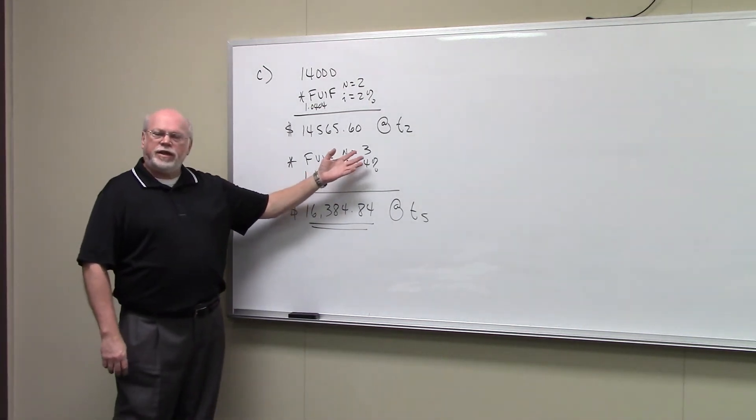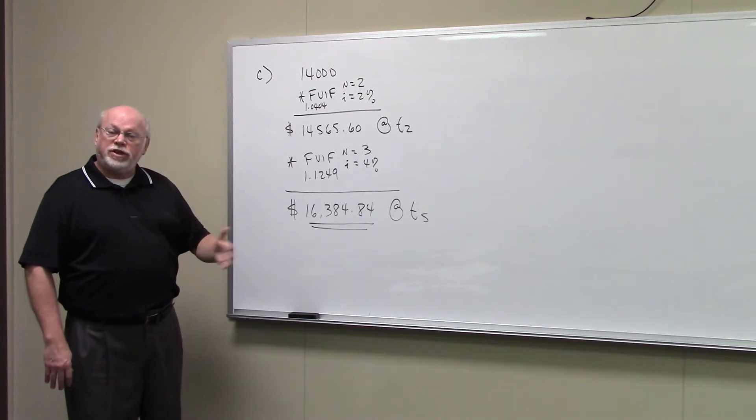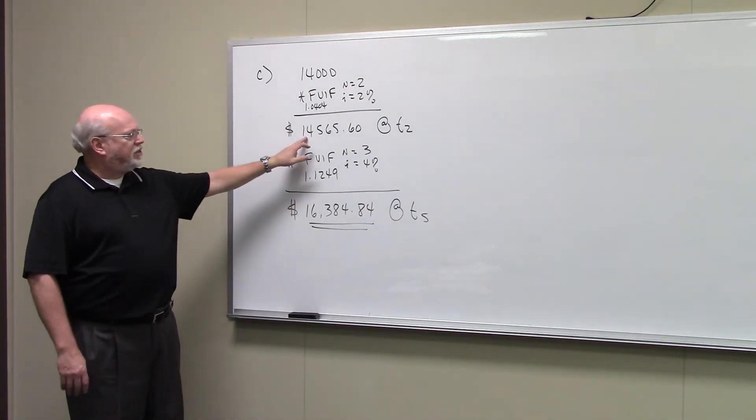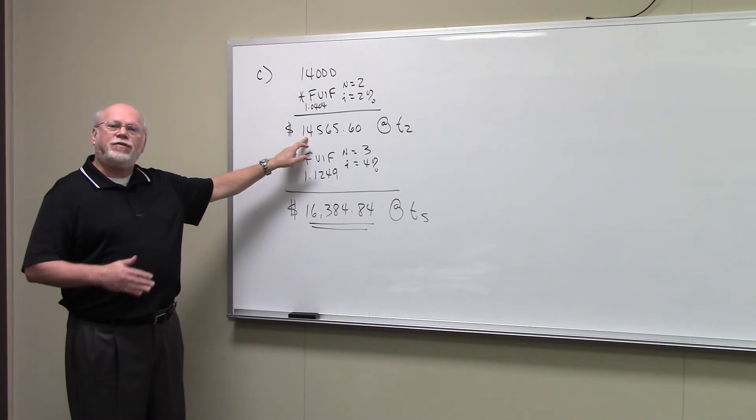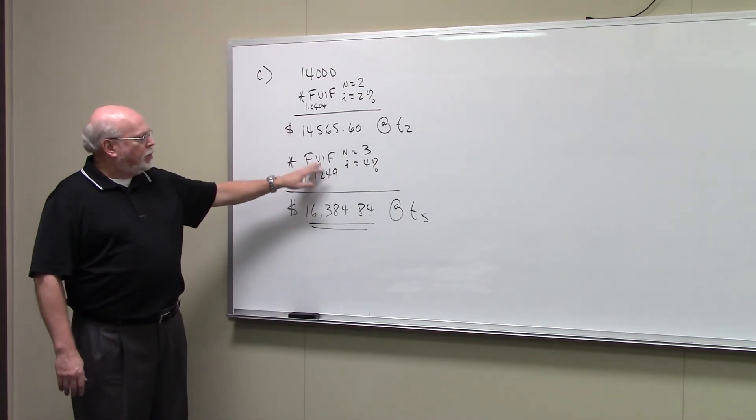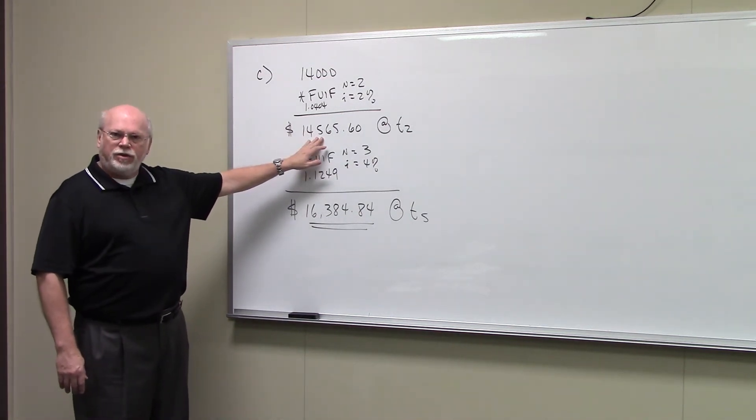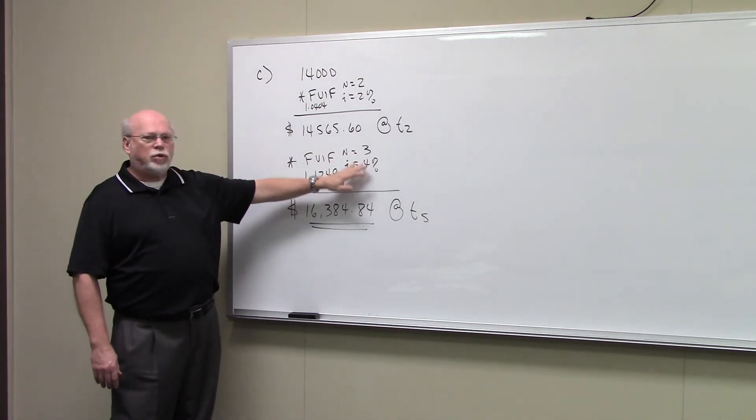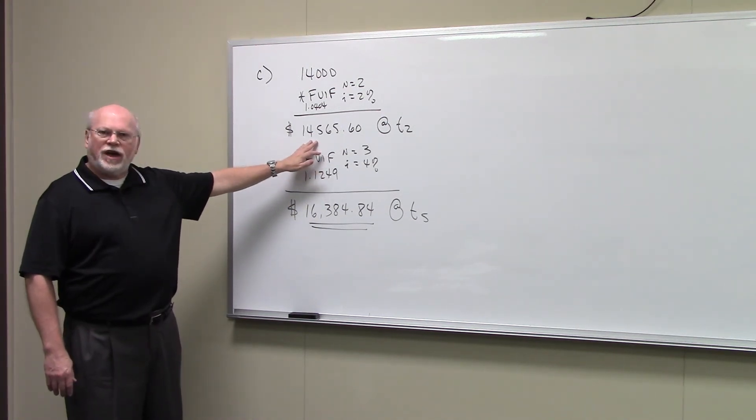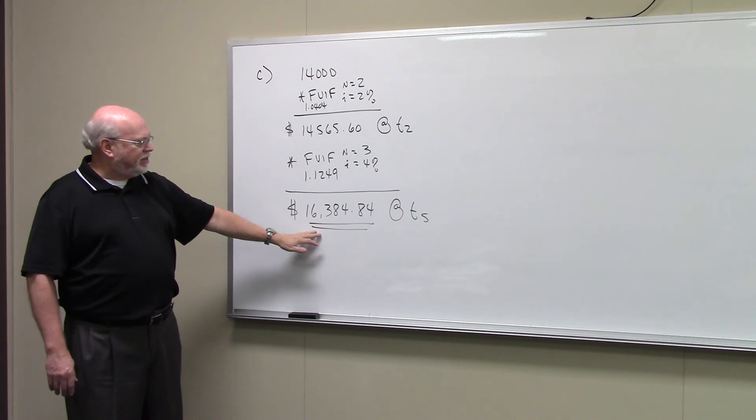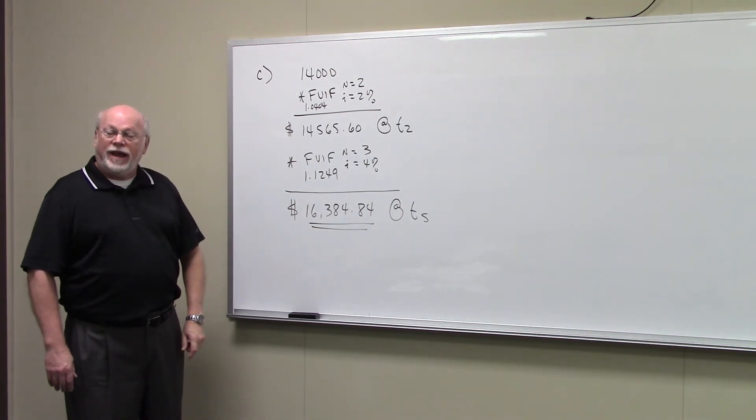After that, now, the car's going to go up in value 4% a year for three years. So if this is the value at the end of the second year, what's going to be the value of the car at the end of the fifth year if inflation goes up 4% a year for three years? Well, we multiply this lump sum value times our FVIF at 3 and 4%, which is 1.1249. 1.1249 times 14,565.60 gets to 16,384.84.